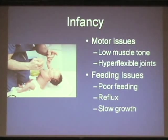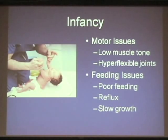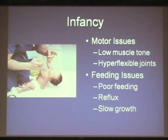Because of lower muscle tone, smaller mouth, and medical issues like cardiac disease, feeding problems are very common. Kids tend not to grow well early on. There's actually a special growth curve designed for children with Down syndrome. They have a higher chance of reflux — spitting up and losing calories — so we watch their growth carefully.